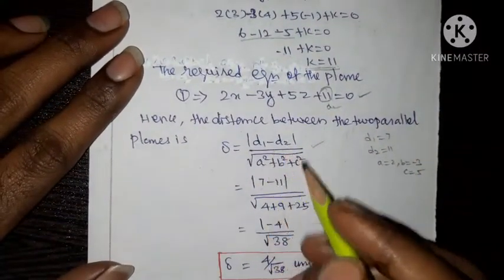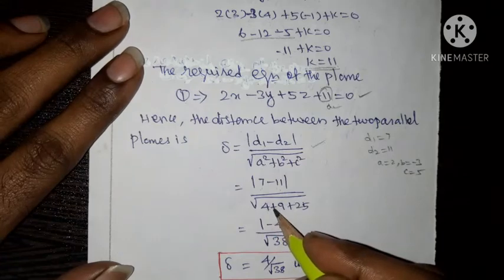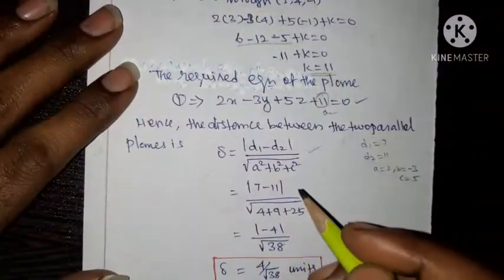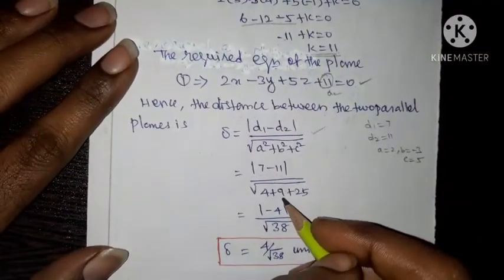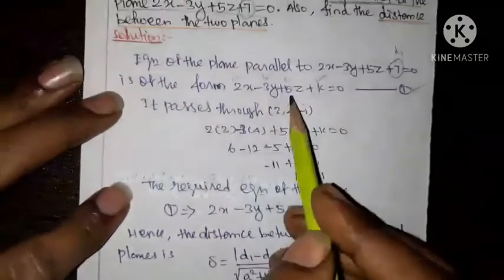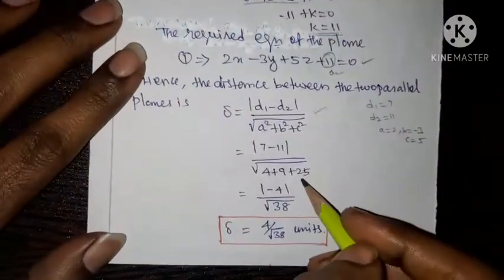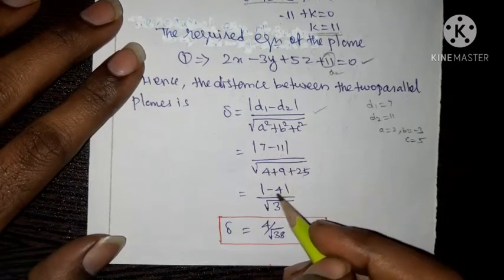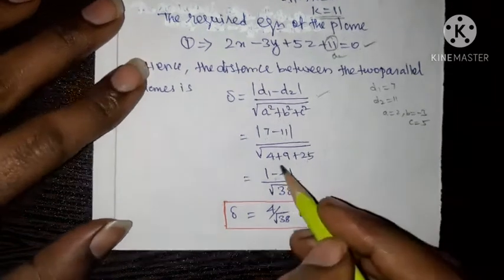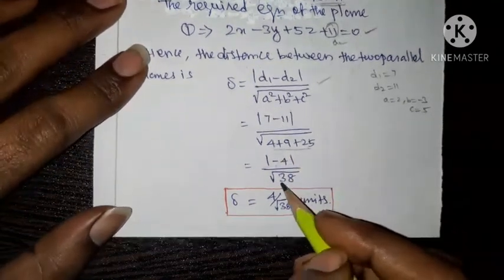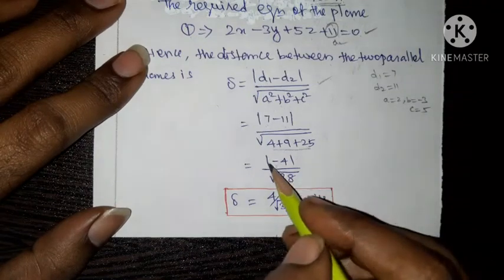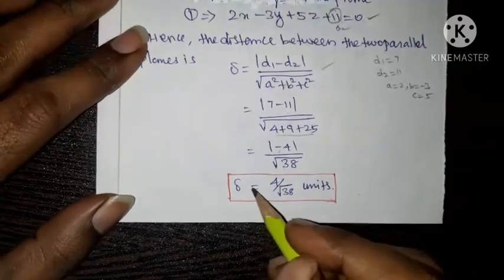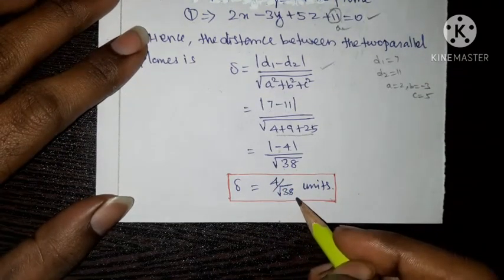Here a equal to 2, so a squared is 4; b equal to minus 3, so b squared is 9; c equal to 5, so c squared is 25. The constants are d1 equal to 7 and d2 equal to 11, so modulus of 7 minus 11 is modulus of minus 4, which is 4. Therefore delta equal to 4 divided by root 38 units.